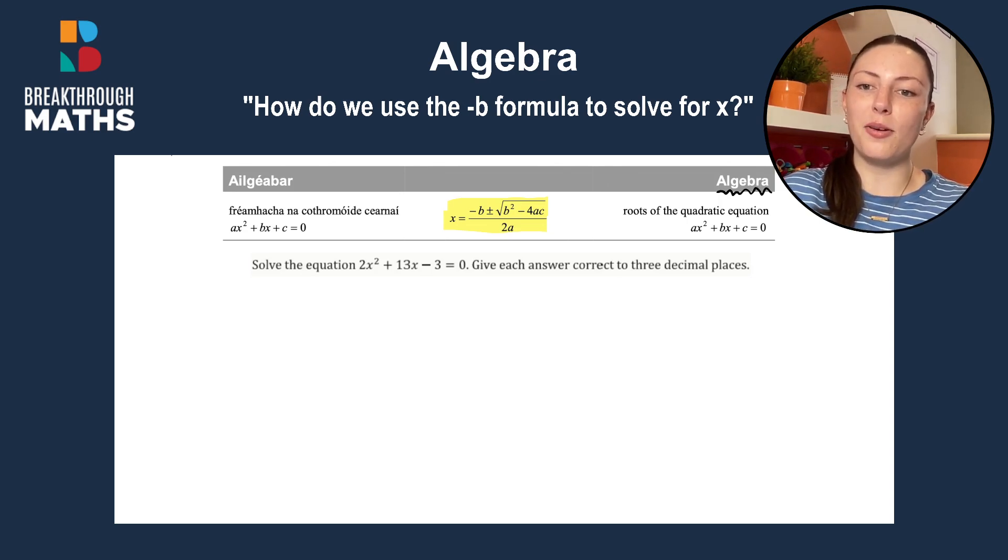OK, so here's our question. We're asked to solve the equation 2x squared plus 13x minus 3 is equal to 0, giving our answer correct to three decimal places. So we need to remember that when we come to our final answers at the end.